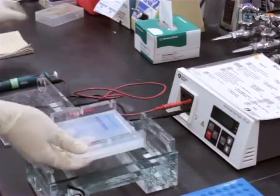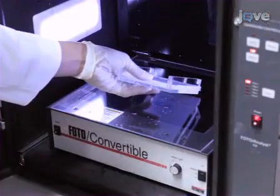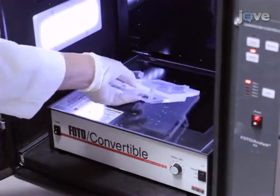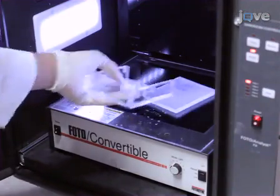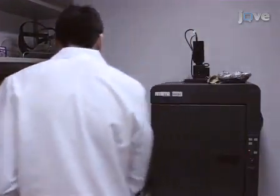Place the gel tray on paper towels to absorb any remaining running buffer. To visualize the DNA fragments, remove the gel from the gel tray and expose the gel to ultraviolet light. This is most commonly done using a gel documentation system.